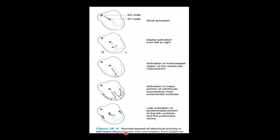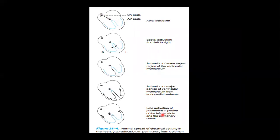This diagram shows the normal spread of electrical activity in the heart. The electrical activity starts in the SA node, comes to the AV node through the internodal pathways, then goes from left to right through the interventricular septum and activates the ventricular myocardium, spreading to the endocardial surfaces. Lastly, it activates the posterolateral and posterobasal portion of the left ventricle and the pulmonary conus.